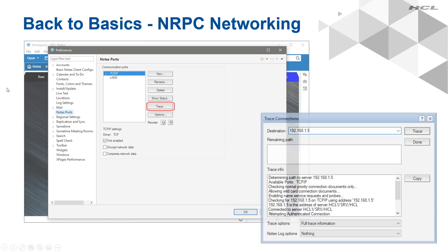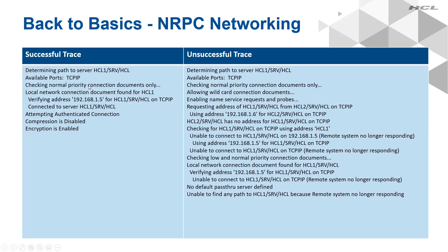If the server isn't listening and nothing happens when using the port, raise a ticket to get the server checked. But what if the server is listening and you still can't connect? There is a utility built into the client that will come in handy. To access it, select from the client's pull-down menu File > Preferences. Then, in the Preferences dialog box, click on the Notes port navigation item. Make sure TCP/IP is selected and click the Trace button. This will open a dialog — enter the name of the server or its IP address and click Trace. The client will proceed through all the steps it can to connect to the server and detail the results in the dialog box, whether successful or not. If unsuccessful, click the Copy button to copy the trace text to the clipboard, then paste it into a text editor and call the help desk with that information. On the right-hand side, we see an unsuccessful trace where, despite different attempts, the Notes client was ultimately not able to connect to the Domino server.